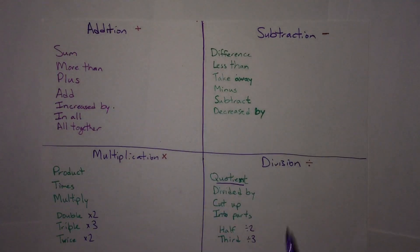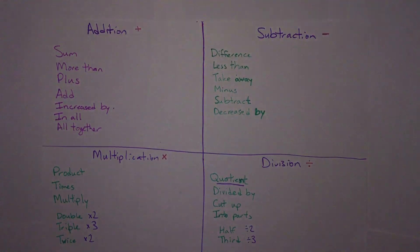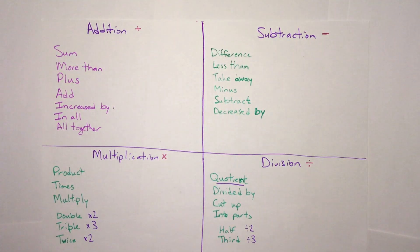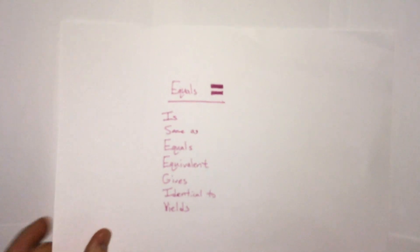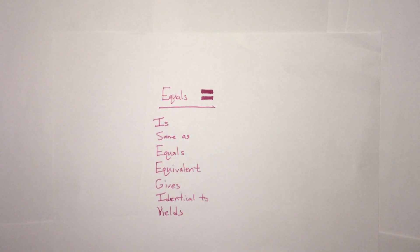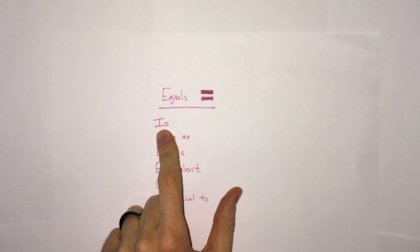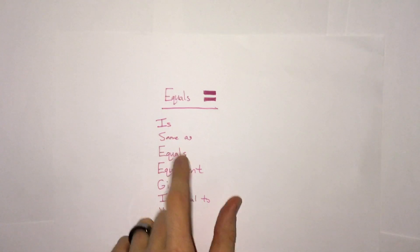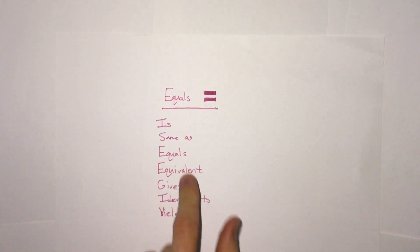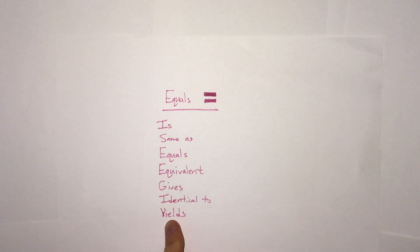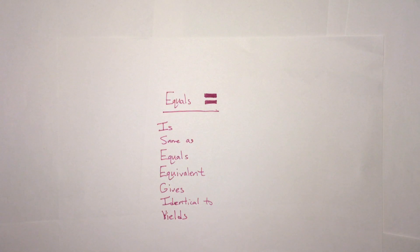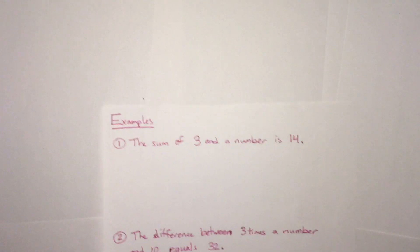We're going to watch for these words as we translate sentences into equations, and we're also going to look at this list of words for equals. One word that might be used is is or the same as, equals, equivalent, gives, identical to, or yields. All of these words are possible words that can mean equals. Let's take a look.